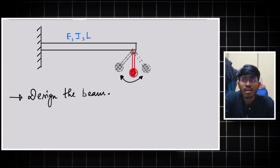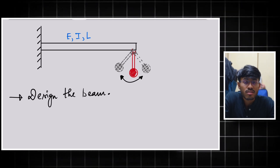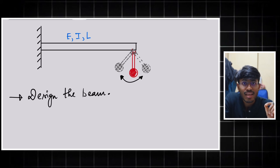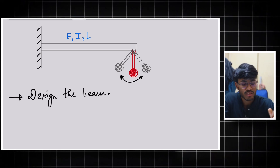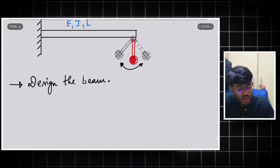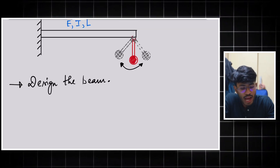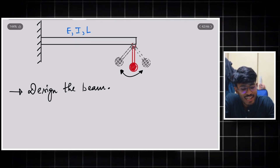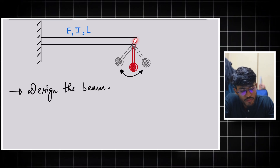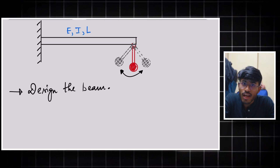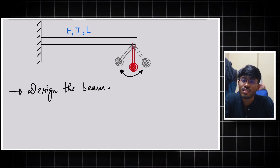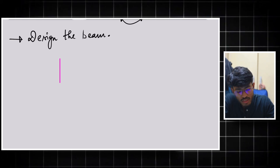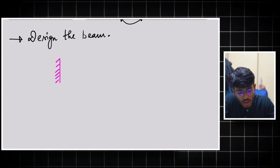The interviewer will not check whether every answer is perfectly correct, but whether you are thinking in the right direction. Obviously this is a beam and we have to find the bending moments — that is clear. The load is acting at the end, and both the direction and magnitude of the load will change. So let me draw the schematic of the beam.